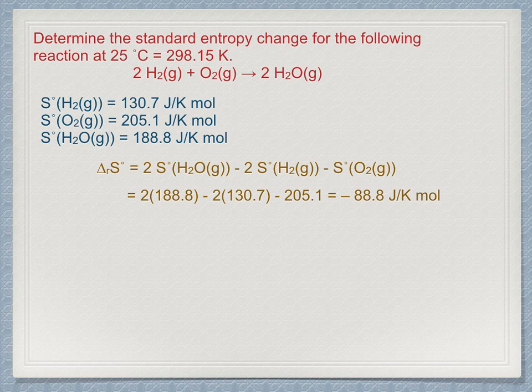Now it's 2 times 188.8 minus 2 times 130.7 minus 205.1 equals minus 88.8 joules per Kelvin mole. This means that whenever the reaction, as written, occurs mole times, then the system's entropy decreases by 88.8 joules per Kelvin.